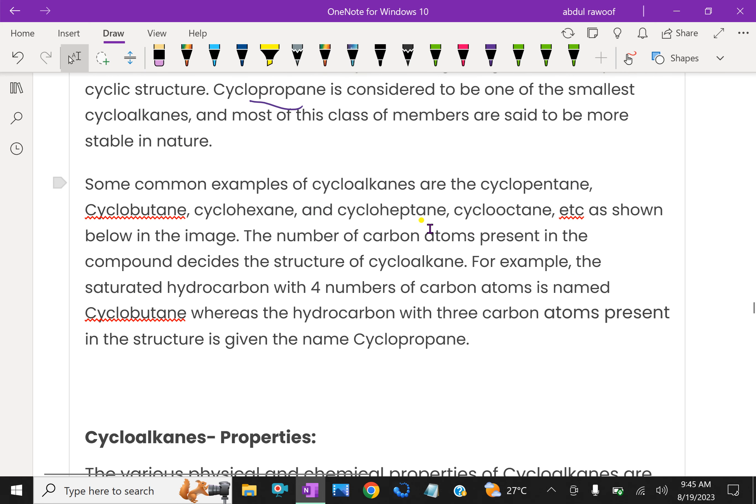Some common examples of cycloalkanes are the cyclopentane, cyclobutane, cyclohexane, and cycloheptane, cyclooctane. The number of carbon atoms present in the compounds decide the structure of cycloalkanes. For example, the saturated hydrocarbon with four number of carbon atoms is named as cyclobutane, whereas the cyclohydrocarbon with three carbon atoms present in the structure is given the name cyclopropane.